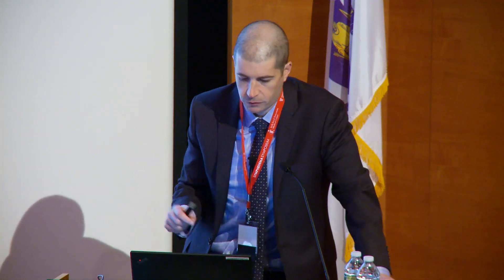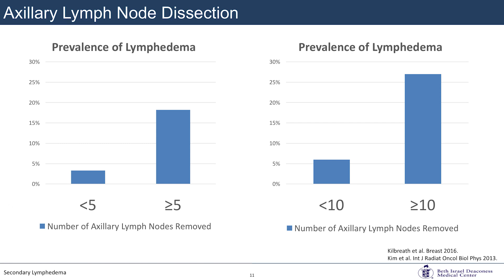Looking at lymph node count in more detail: one study using a threshold of five lymph nodes showed a rate of about 4% when under five nodes were removed, versus about 18% when greater than five were removed. Another study used a threshold of 10, showing a 5–6% prevalence below 10 nodes, with a dramatic increase to over 25% when 10 or more lymph nodes were removed.